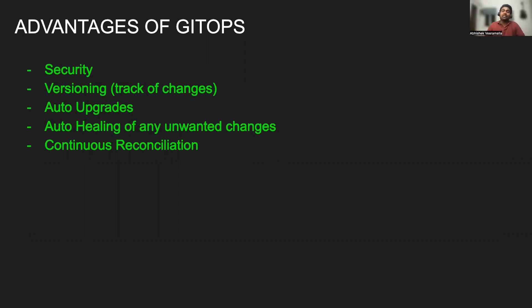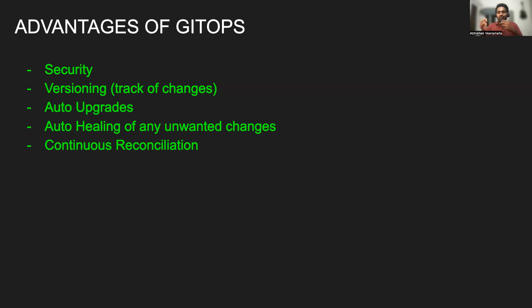You can use S3 buckets as well for GitOps — it does not mean you have to use GitHub, Azure Git, GitLab, or Bitbucket. By definition, the word GitOps might seem tightly coupled with Git, but it is actually tightly coupled with the versioning concept. The third advantage is auto upgrades — you can do it using a pull mechanism or push mechanism. The fourth is auto healing behavior — using GitOps you can auto heal your infrastructure when someone makes an unwanted change. And fifth is continuous reconciliation.